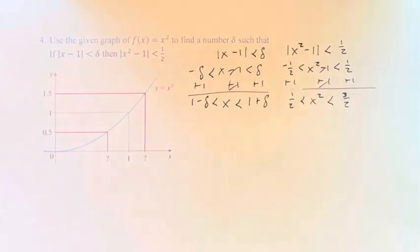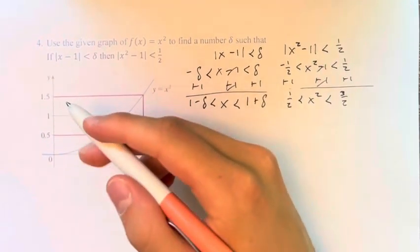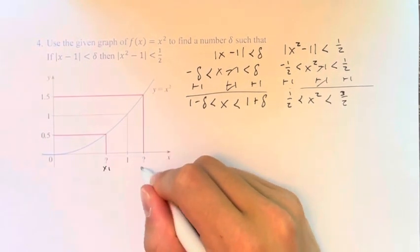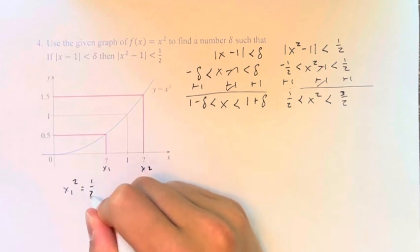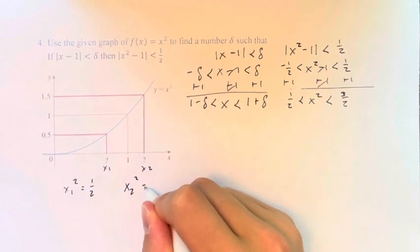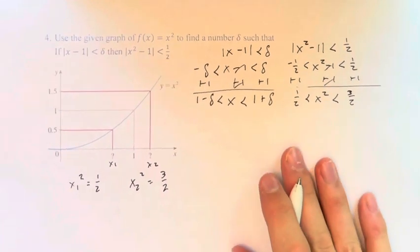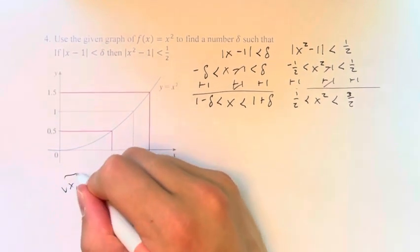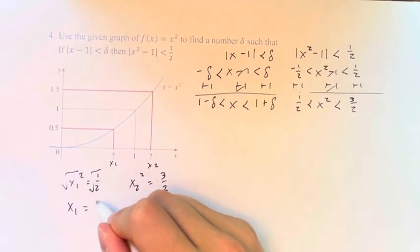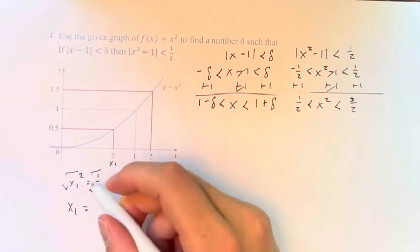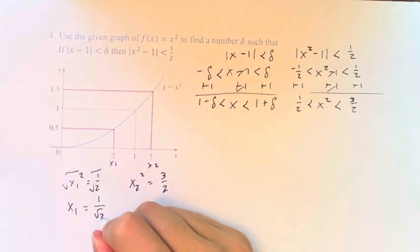So what are these x values? If this is x1 and this is x2, we know that x1 squared equals 1 half and x2 squared equals 3 halves. If we take the square root of both sides, we get that x1 equals the square root of 1, which is just 1, over the square root of 2.